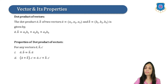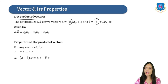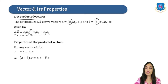Now let us study the dot product of vectors. The dot product A bar · B bar of two vectors A bar = (A1, A2, A3) and B bar = (B1, B2, B3) is given by: A bar · B bar = A1·B1 + A2·B2 + A3·B3. This is the formula for the dot product.